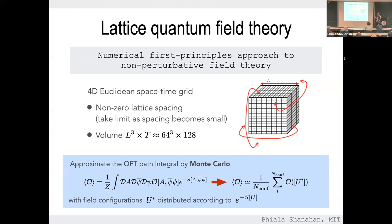We've already heard quite a bit about lattice quantum field theory, but let's start with a reminder. This is QCD-specific: we discretize onto a four-dimensional Euclidean space-time grid, though lower dimensions are also possible. Essentially, we have a numerical first-principles approach to studying field theory in the non-perturbative regime in a way that's systematically improvable. In the limit as the lattice spacing becomes small and the lattice volume becomes large, you can map to your continuum infinite-volume theory.